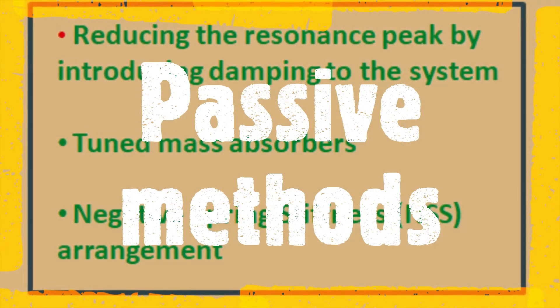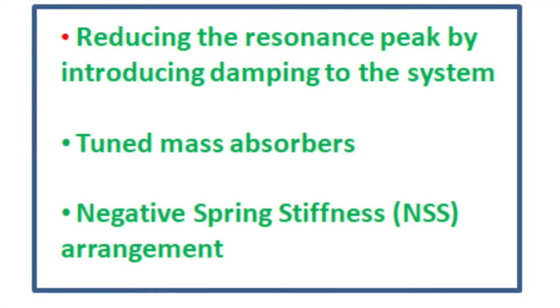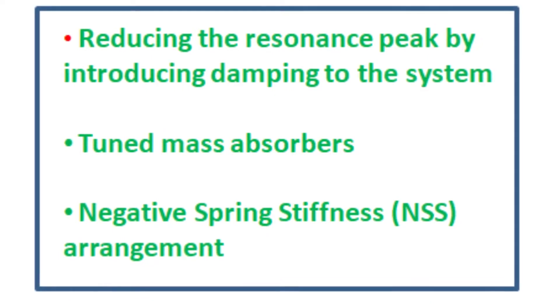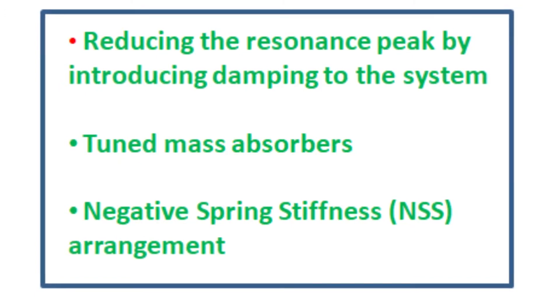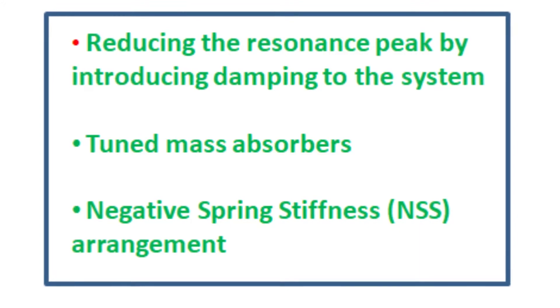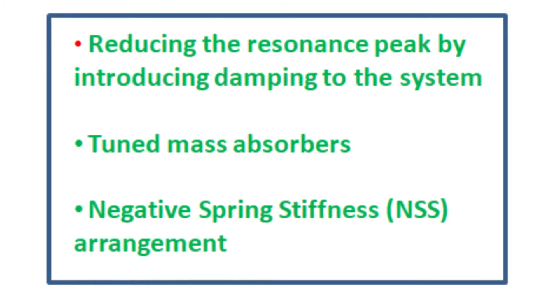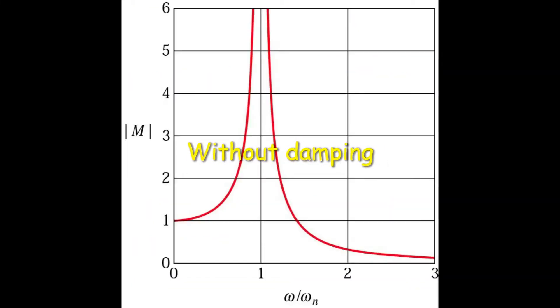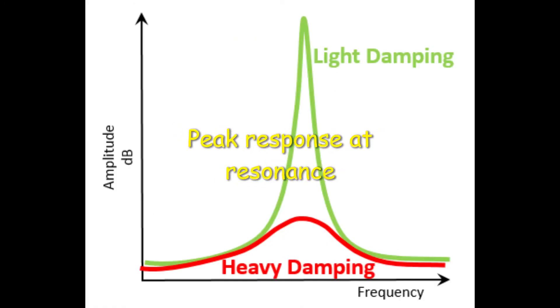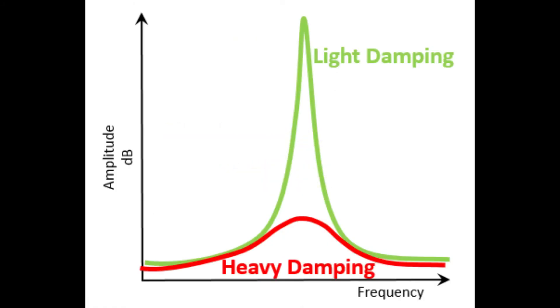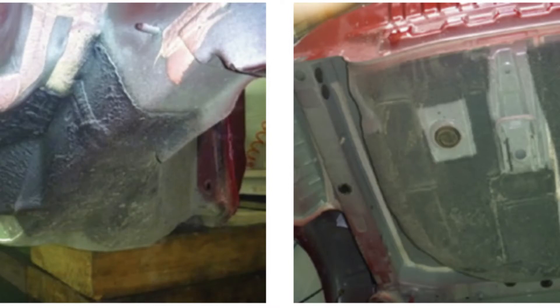If working on both the source side and the system side is not possible, one has to go for passive techniques like application of damping, tuned mass absorbers, or negative spring stiffness techniques. The application of damping can reduce the severity of vibration operating at or near a natural frequency. The plot shows the reduction in amplitude of the system response as damping increases. In practice, damping treatments are often used to reduce vibrations.